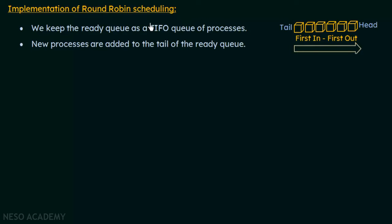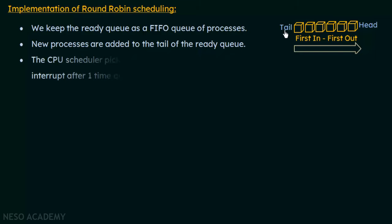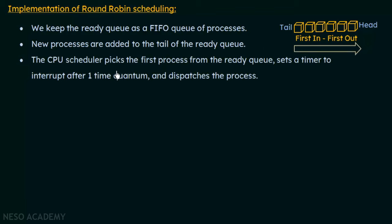In the implementation, we keep the ready queue as a first-in first-out (FIFO) queue of processes, with a head and a tail. New processes are added to the tail of the ready queue. The CPU scheduler picks the first process from the head of the ready queue, sets a timer to interrupt after one time quantum, and dispatches the process.